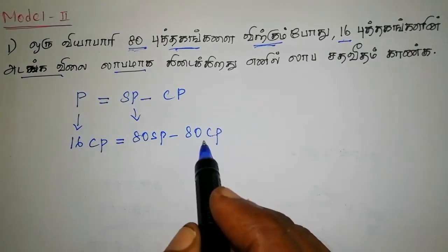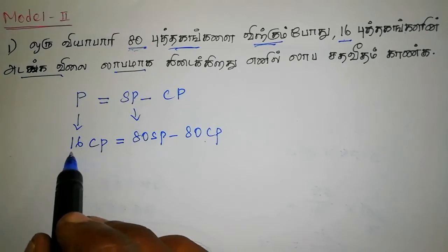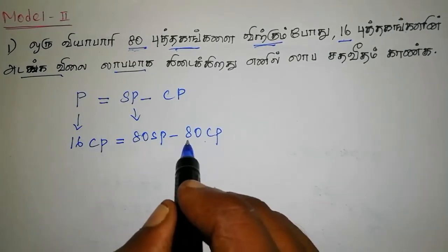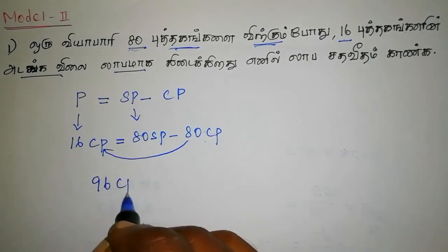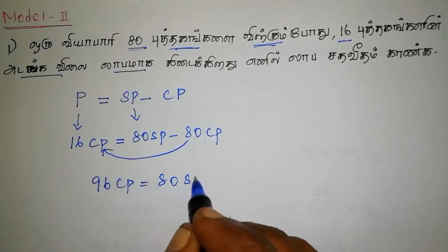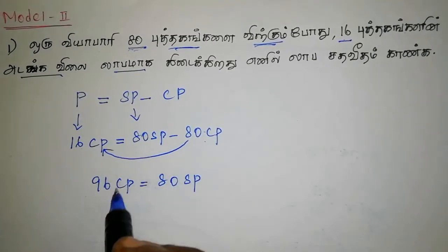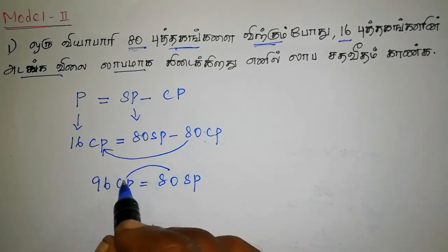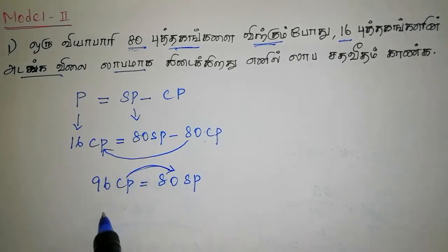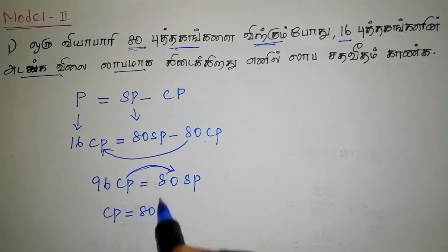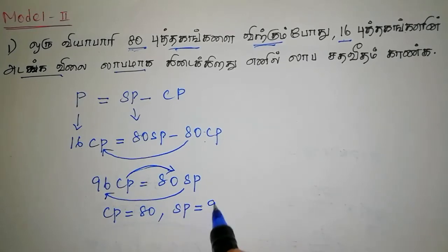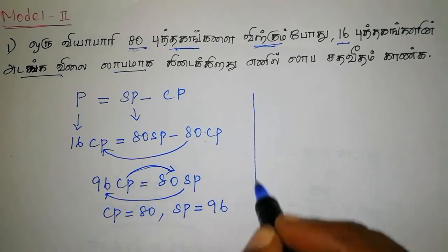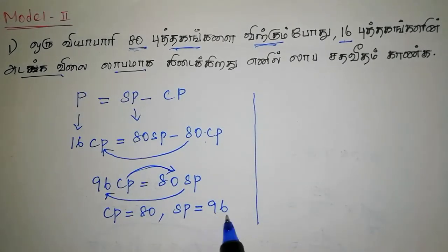This is called: 19 CP is equal to about 50 SP. CP will take the number — CP equals 80, CP will take the number to 90, SP will take the number to 90. If you have the number to 90, you will need to invoke it.